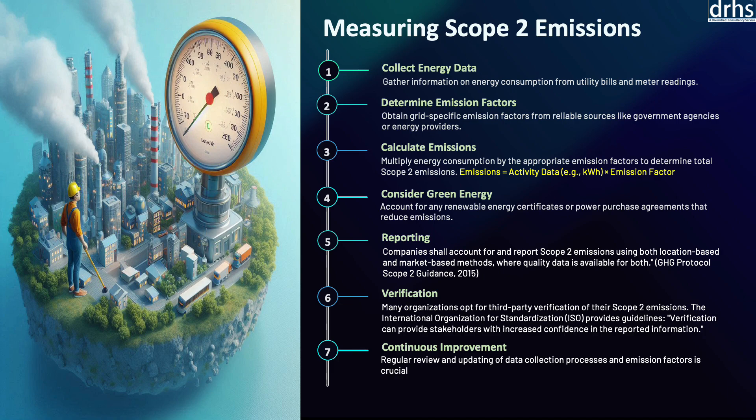By continuously improving their approach to measuring and reducing scope 2 emissions, organizations can not only meet regulatory requirements but also contribute to broader sustainability goals such as reducing global carbon emissions and combating climate change. The Science Based Targets Initiative (SBTi) emphasizes that companies should regularly assess and update their scope 2 emissions calculations to ensure accuracy and identify reduction opportunities.